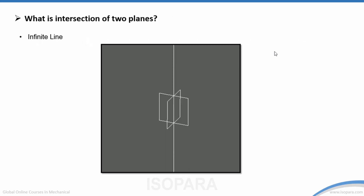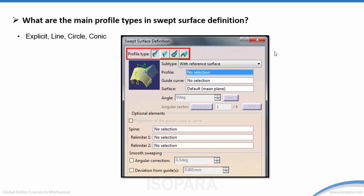What is the intersection of two planes? If we use the Intersection command on two planes, the result will be an infinite line.